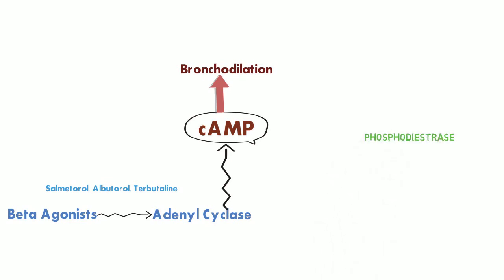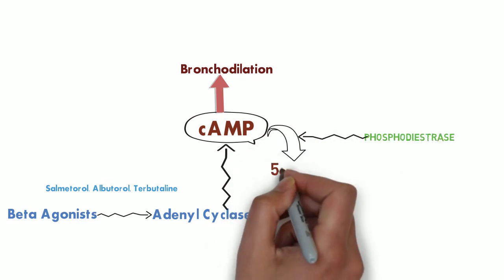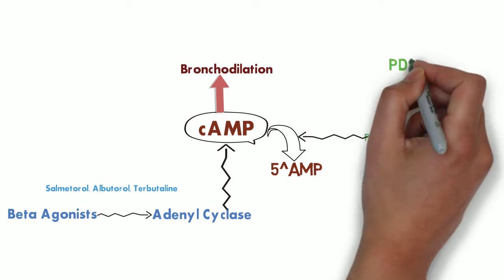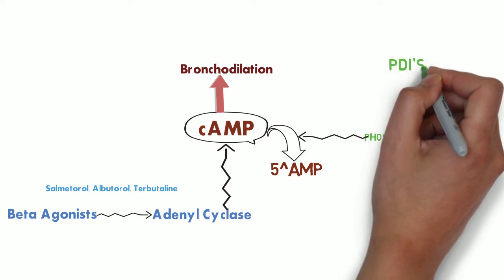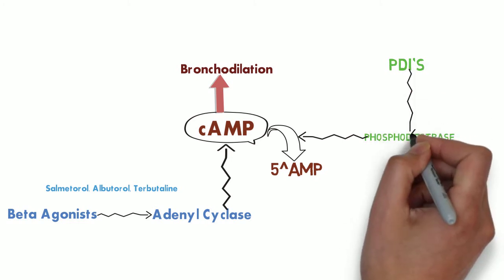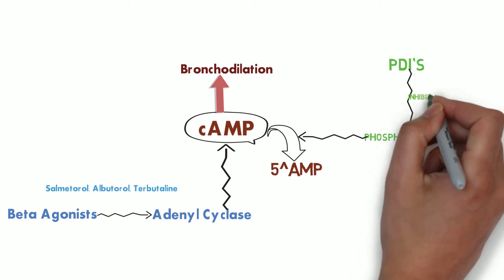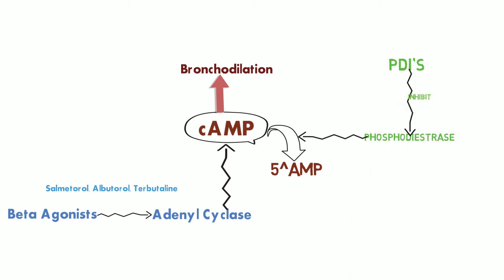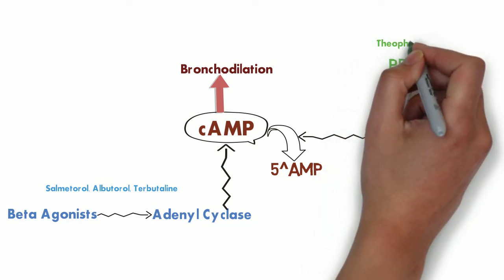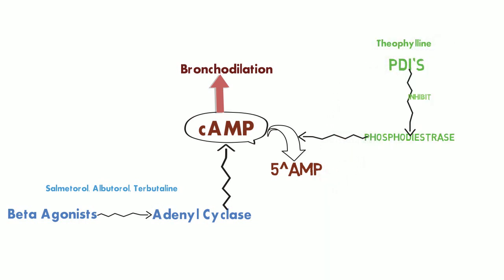Cyclic AMP is a temporary molecule and it is degraded by the enzyme phosphodiesterase into a product called 5-AMP. The class of drugs called phosphodiesterase inhibitors inhibit the enzyme phosphodiesterase and hence prevent the degradation of cyclic AMP into 5-AMP. The example is theophylline.